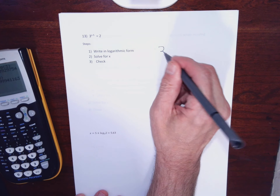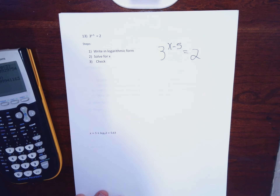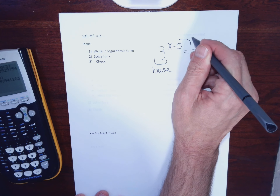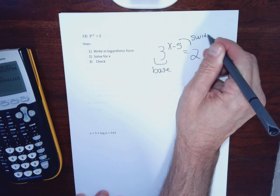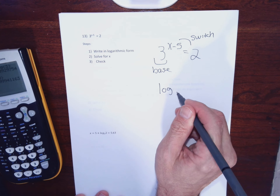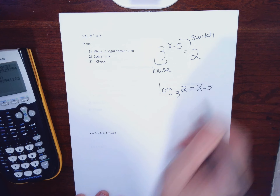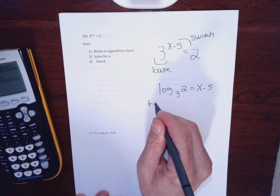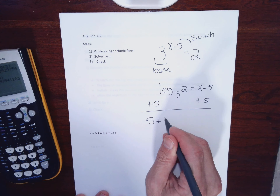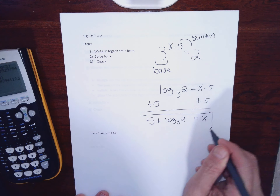Same style for number 13. I'm going to introduce a logarithm because it's not possible to write the right-hand side as 3 to some power. Anytime you have an x in an exponent, you can absolutely use logs to solve. I'm going to write the word log, make 3 the base, bring the 2 over with the 3, and move x minus 5 to the opposite side. I'll add 5 to both sides to solve for x. The 5 can be written before or after the logarithm — for my calculator it's easier before. That's my answer.